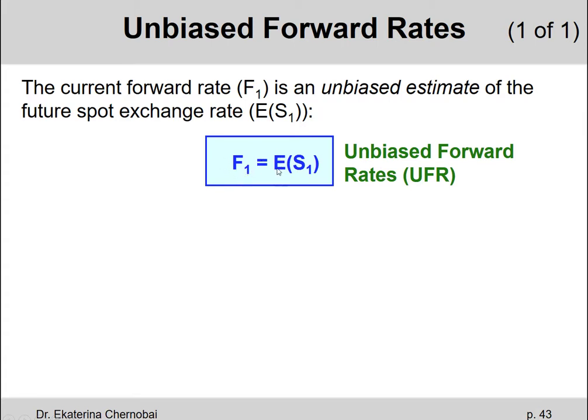So F1 equals expected S1, and that's known as the unbiased forward rates. Biased would be like people expect the exchange rate to be this many yen per dollar, but somehow for some reason today they're locking in a slightly higher or a slightly lower exchange rate to be used in one year.